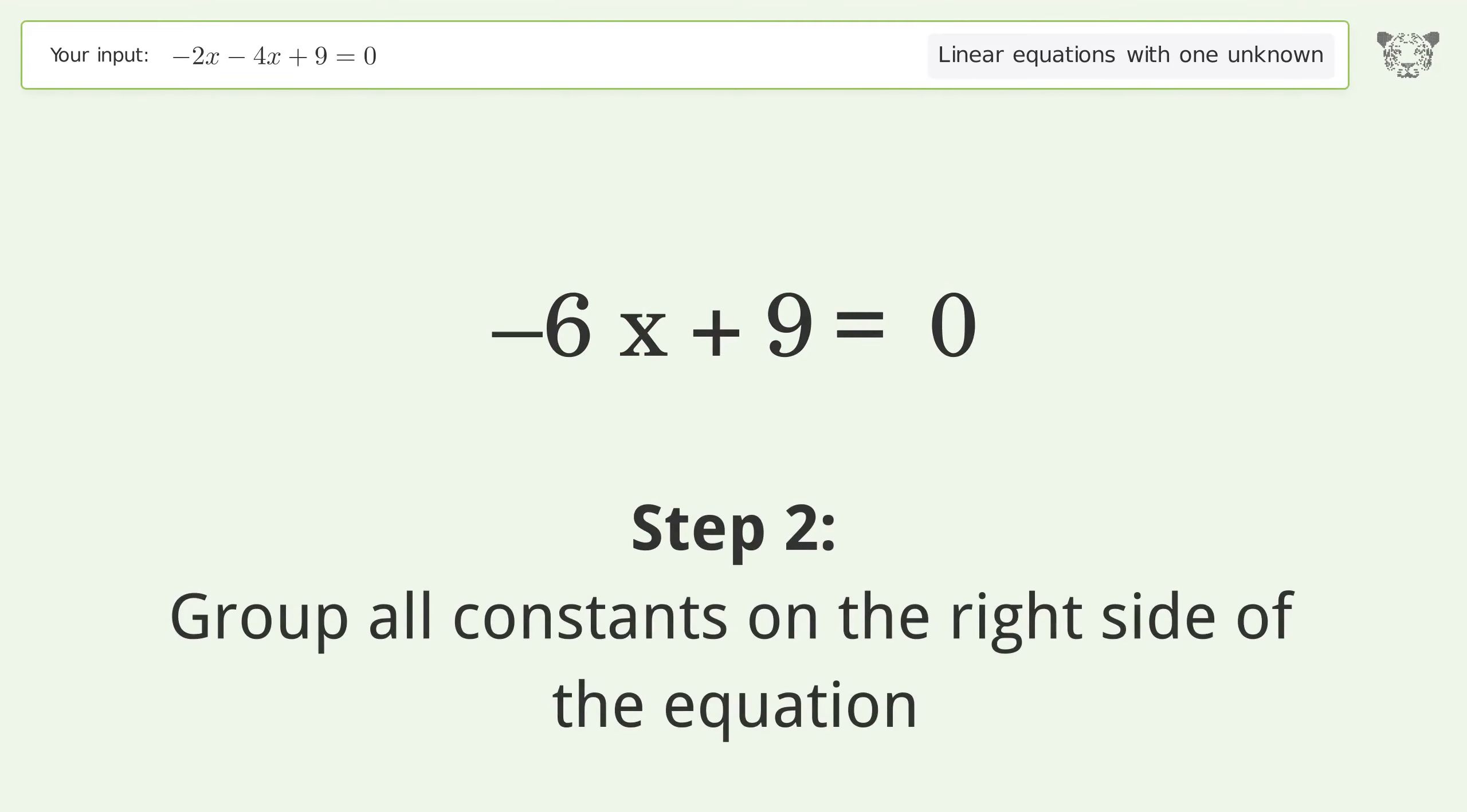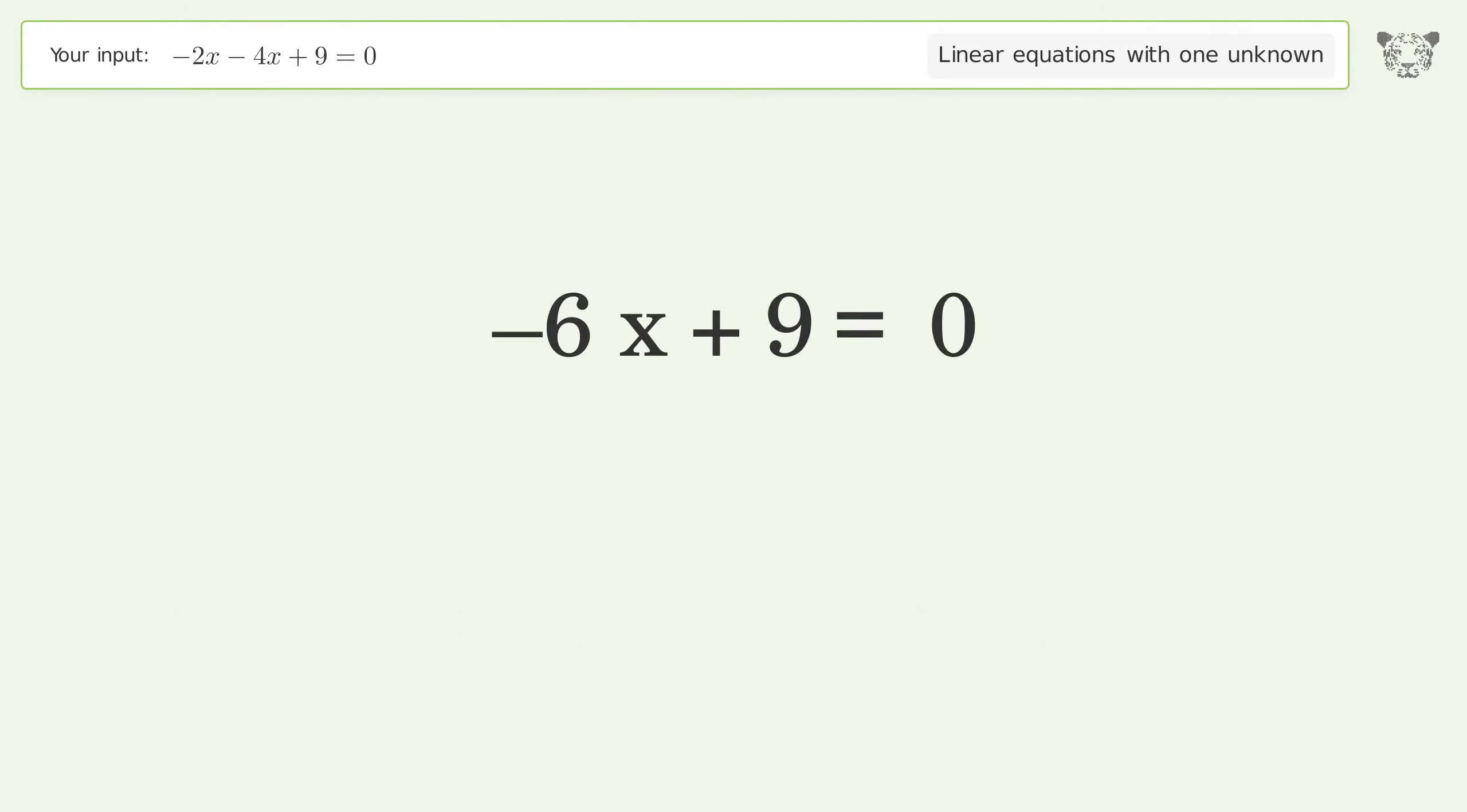Group all constants on the right side of the equation. Subtract 9 from both sides. Simplify the arithmetic.